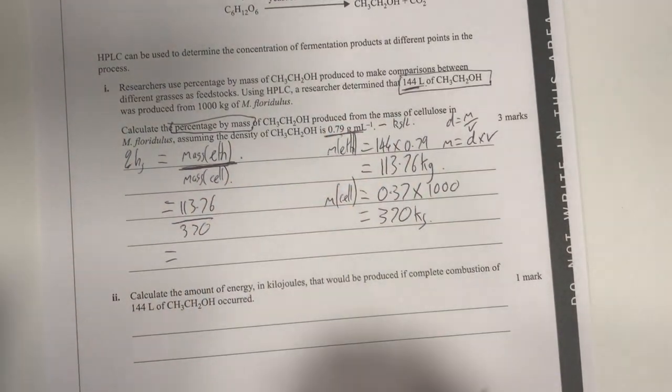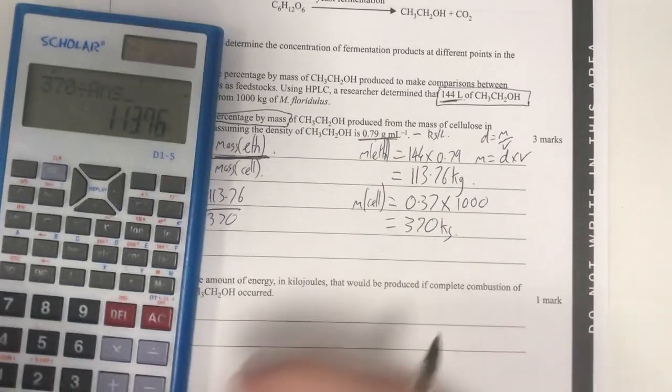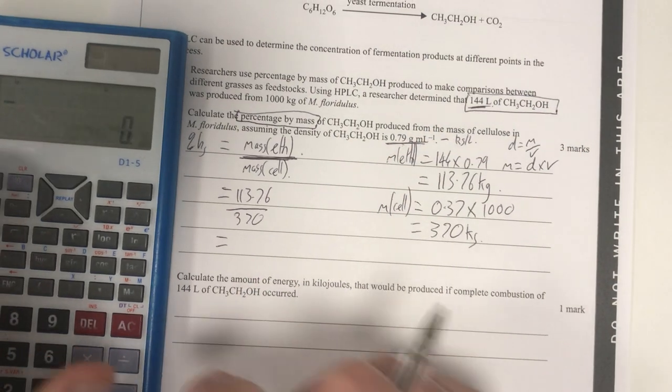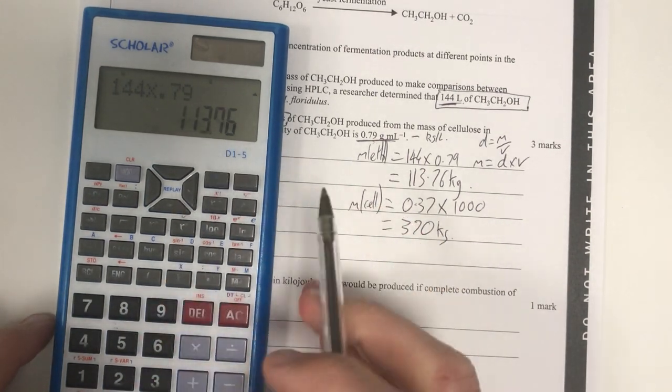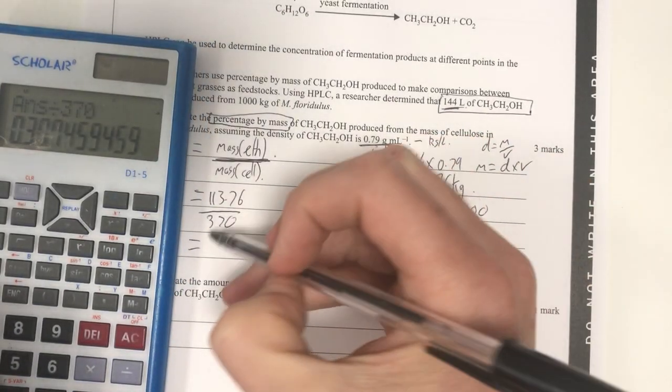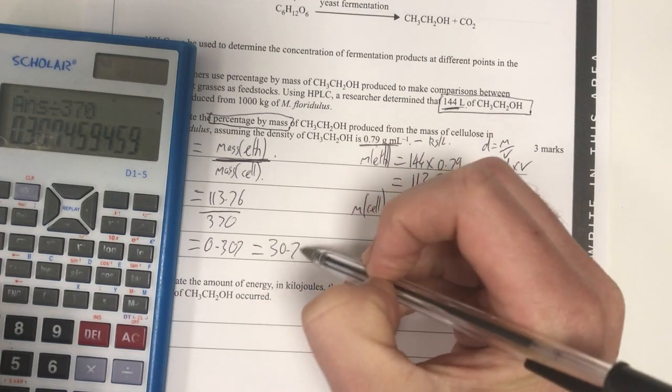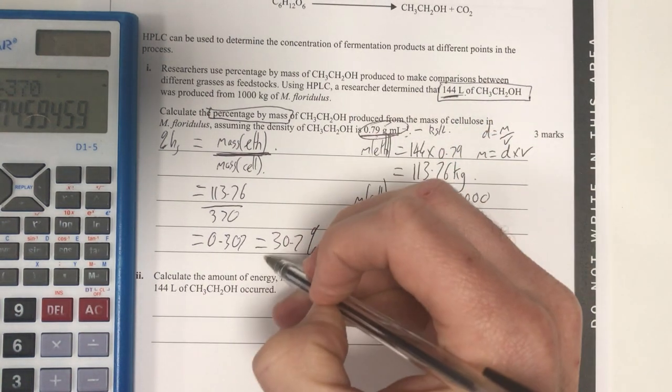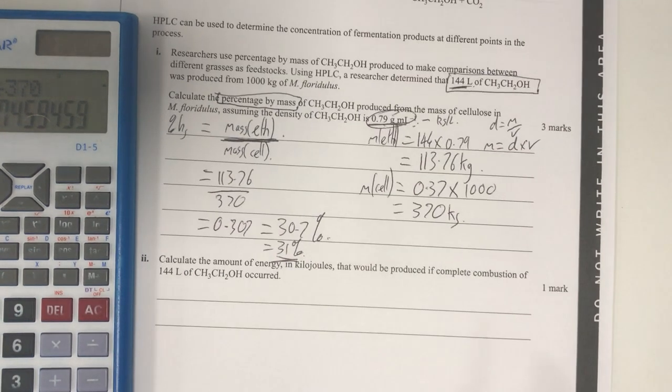So my percentage is going to be equal to 113.76 divided by 370, which is going to be equal to something. So I divide that by 370 equals 0.307 equals 30.7%. Now let's look for significant figures. I've only got two significant figures there. So I'm going to go 31% here. So that should be my percentage by mass.